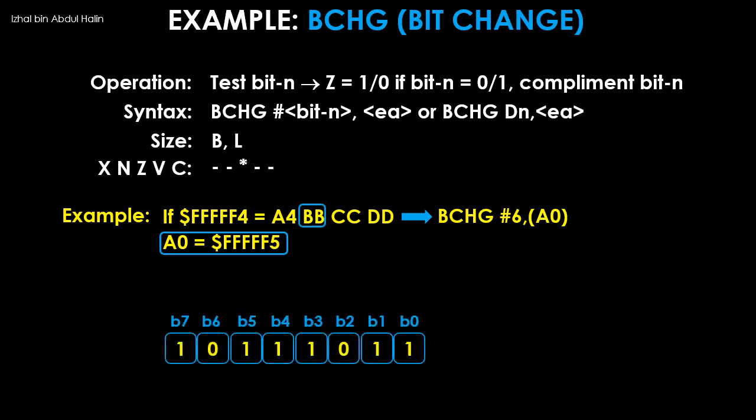Here is BB in binary format. Back to the instruction, the sixth bit is to be tested and changed. When the 68k checks bit 6, the value is 0. Thus the Z flag is changed to 1.